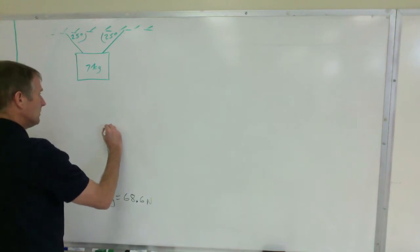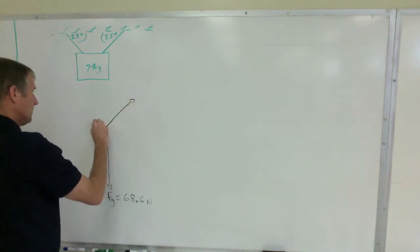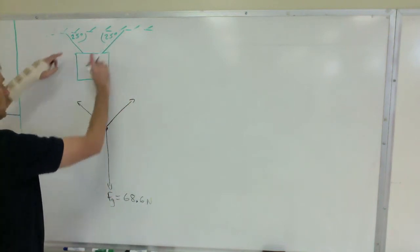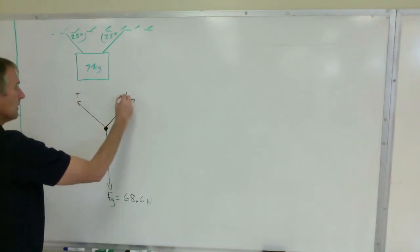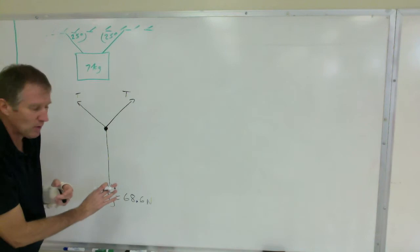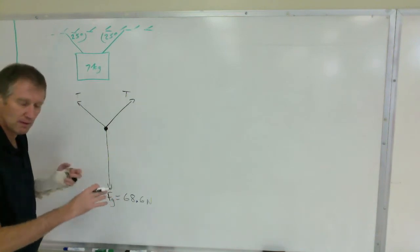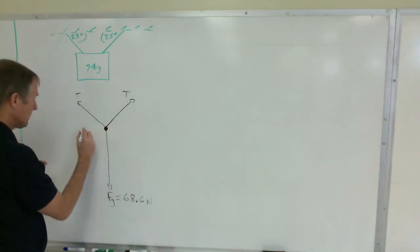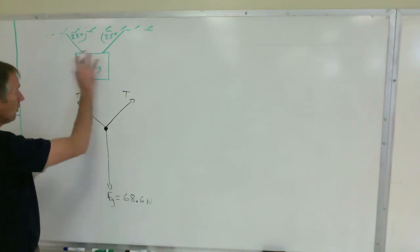And you've got the tension going that way and that way because there are two cables, T and T. Because this is at an angle, don't tilt your axes. People want to tilt axes like they do with a ramp, don't do that. Not for this, that's only on a ramp question, no ramp involved.